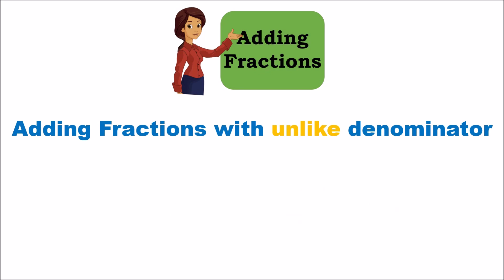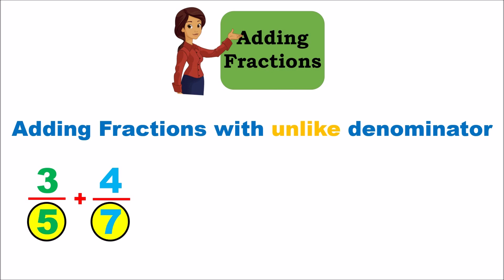You could also have fractions with different denominators that you want to add. For example, 3 fifths and 4 sevenths — the first fraction has 5 as the denominator and the second has 7. Since 5 and 7 are different, you cannot do what you did in the previous example. There's an extra step you have to go through before you can add them.